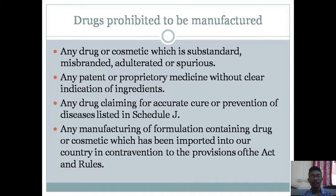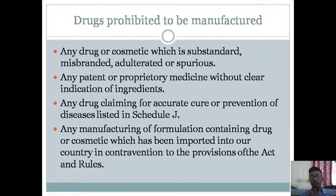Any patent or proprietary medicine without a clear indication of ingredients is also prohibited. When manufacturing a patent or proprietary medicine, we need to mention accurately the amount of active constituents and inactive ingredients used in the formulation. All this information should be included in the application for obtaining a manufacturing license.